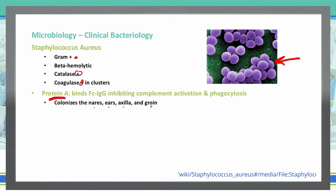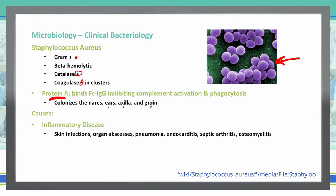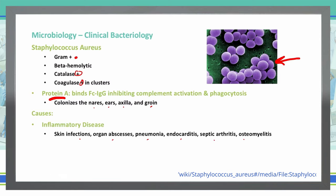What conditions does Staph aureus cause? First and foremost, it causes inflammatory diseases. Staph skin infections are very common. Organ abscesses, pneumonia, endocarditis, septic arthritis, and osteomyelitis are all potential inflammatory diseases associated with a Staph aureus infection.